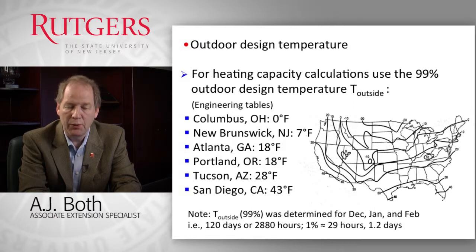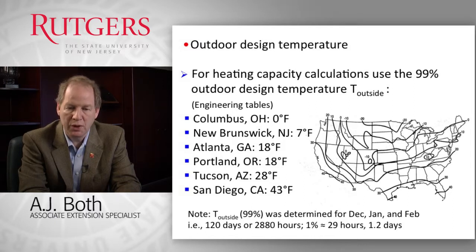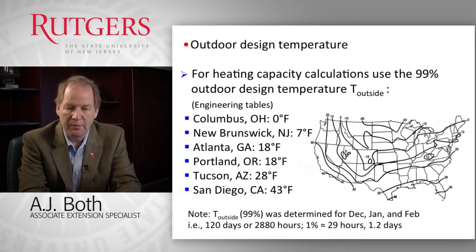You can look at a map showing contour lines of the 99% design temperature across the United States, though tables are typically better because they offer higher resolution for specific locations where you want to design your heating system.